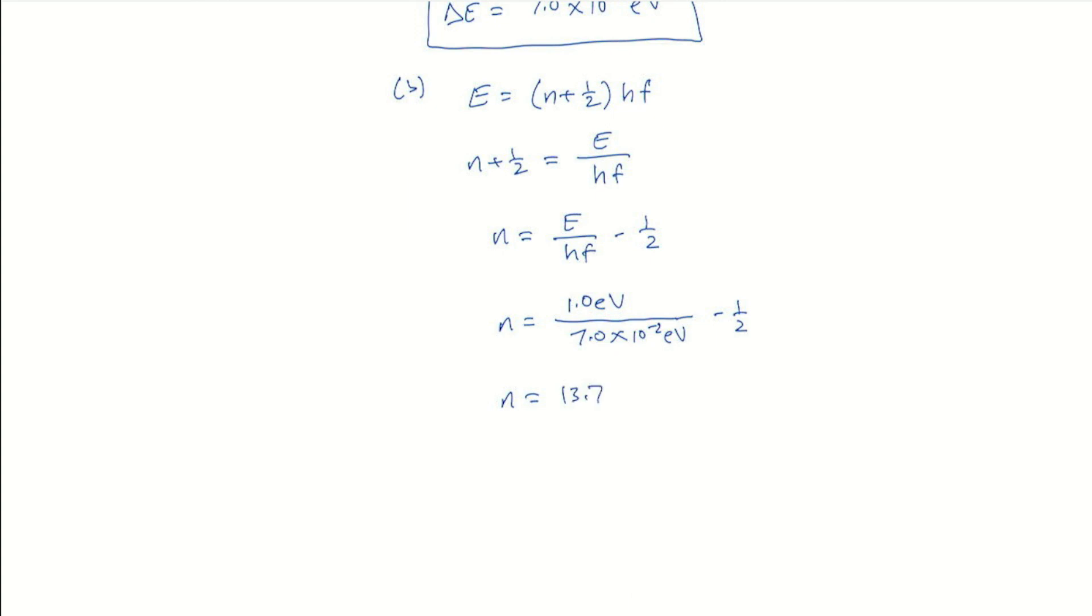Now n is a non-negative integer. That means it can be 0 or a positive integer. So we need to round this, and we will round it up and say n is going to be approximately 14.